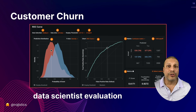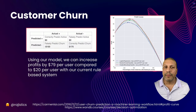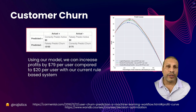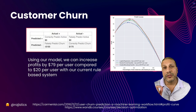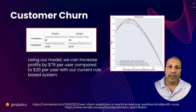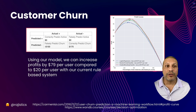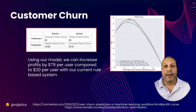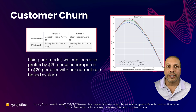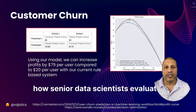That approach is missing something — that's how a junior data scientist would evaluate the problem. A more sophisticated approach, in line with the business, is to use those same metrics but put dollar amounts in. Dollar amounts for when we get something correct, dollar amounts for when we miss. Based on that we can compare different models against our baseline and see the profit or revenue we could generate.